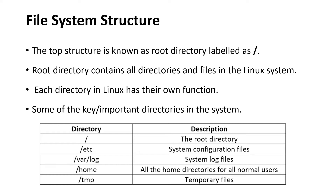Let's look at the file system structure. The top structure in Linux is the root directory, labeled as forward slash. The root directory contains all the trees and files in the Linux system since it is the top directory. Each directory in Linux has its own function, similar to what we have in Windows, like document folders. Each folder has its specific function.